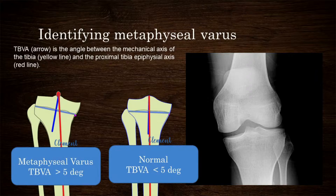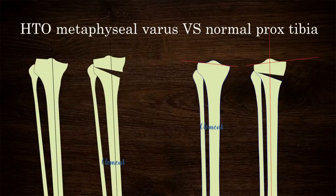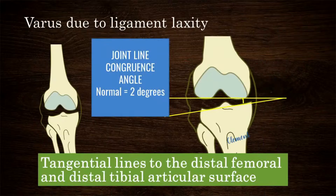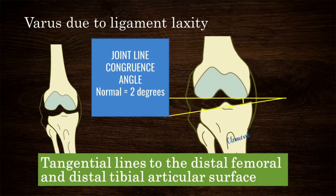HTO gives the best results when done for a metaphyseal deformity, as it corrects the deformity and restores normal morphology. Conversely, an HTO with normal proximal tibial morphology can induce a new deformity even though unloading is achieved. One should not correct the component of varus produced by lateral joint opening due to excess ligament laxity in bone. The joint line convergence angle (JLCA) — the angle between tangentials to the distal femoral and distal tibial articular surfaces — is normal up to 2 degrees; any value greater should be subtracted from the overall varus correction.